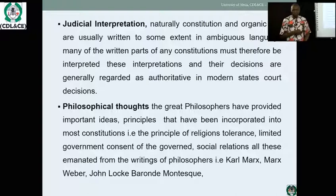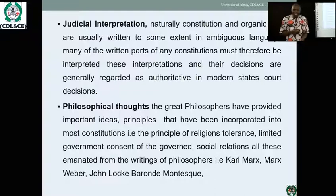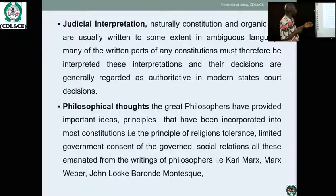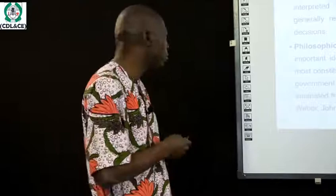Another source is judicial interpretation, also called judicial precedent. Cases decided in the past, judgments given, and judicial experiences and interpretations that are valued by current society have been co-opted into the national constitution. Pronouncements not earlier written in the constitution have been incorporated through subsequent amendments and reforms. Because constitutions are often written in ambiguous language, judicial interpretation forms a major source of parts of the 1999 constitution as we have in Nigeria today.